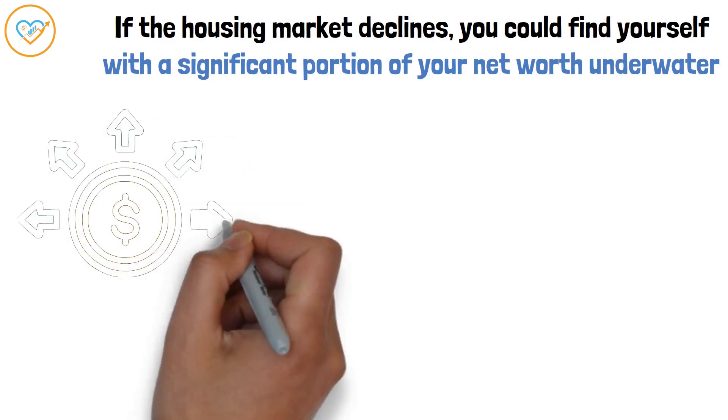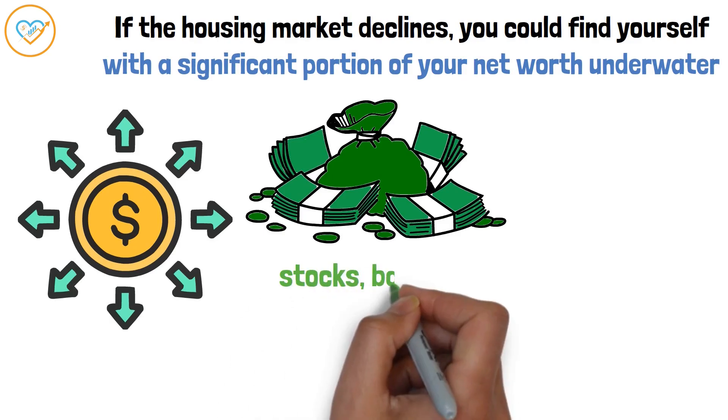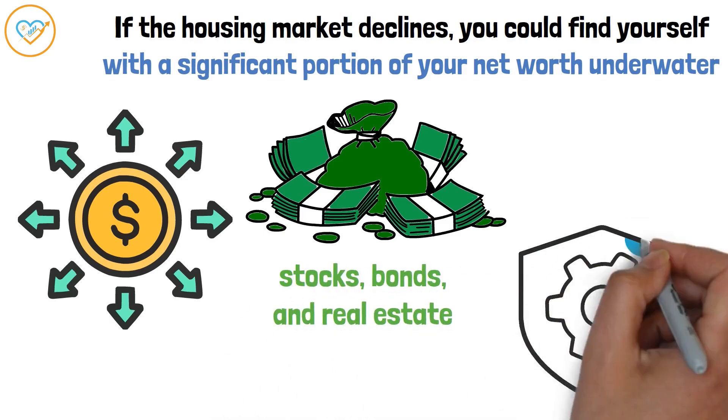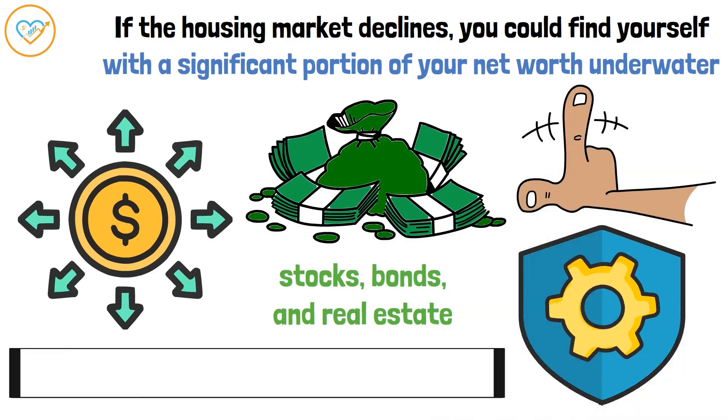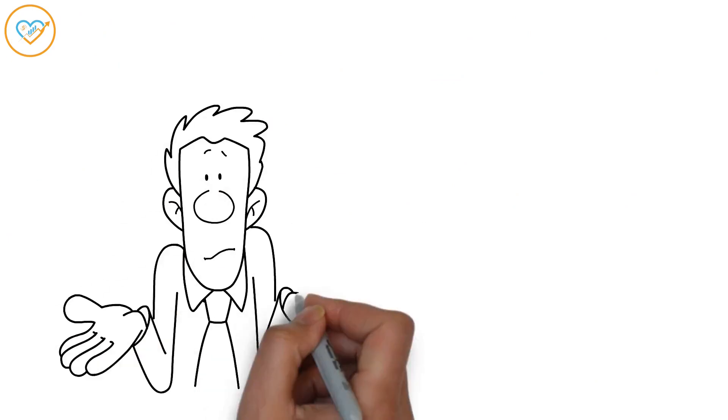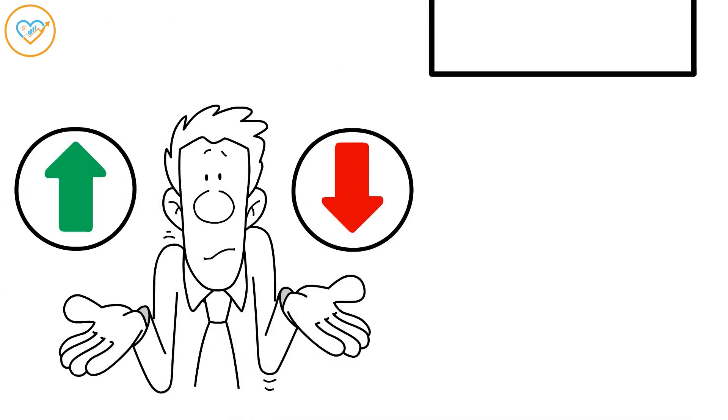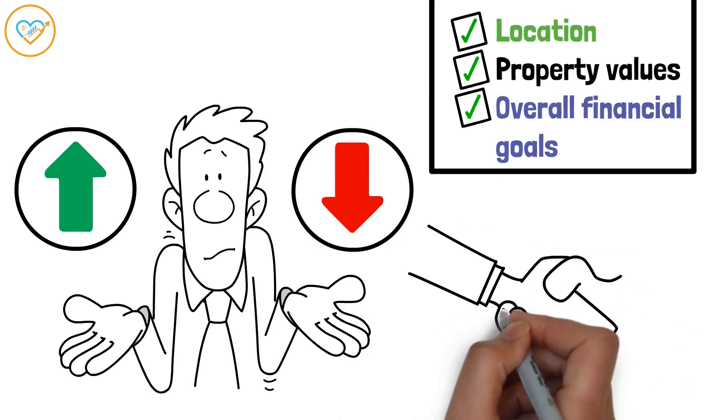Diversification is key in investing. Spreading your money across different assets like stocks, bonds, and real estate can help protect you from market fluctuations. That's not to say you shouldn't own a home. It can be a great long-term investment, but it's essential to weigh the pros and cons carefully. Consider factors like location, property values, and your overall financial goals before making a significant commitment.